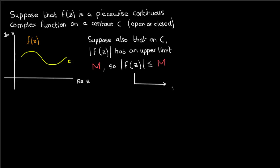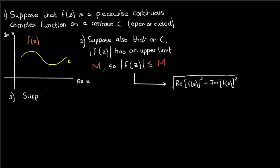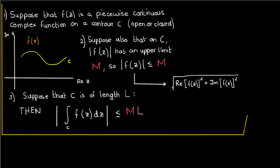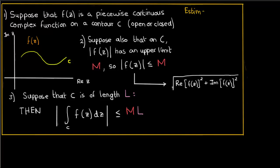Recall that by magnitude I mean the square root of the real part squared plus the imaginary part squared. A function of a complex number is also a complex number, so it's going to have both a real and imaginary part. Now if both of these conditions are true — that f is piecewise continuous on c and has an upper bound m on its magnitude on c — and the contour c has a length l, then the magnitude of the integral of f of z over c is less than or equal to m times l. This theorem is called the estimation lemma, also known as the ML inequality theorem.